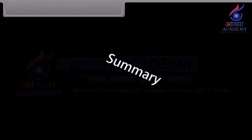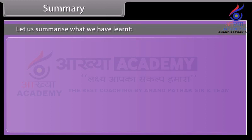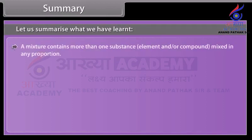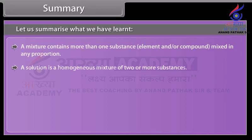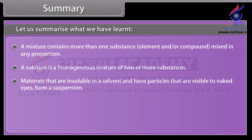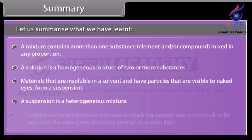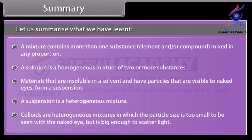Summary. A mixture contains more than one substance, element, or compound mixed in any proportion. A solution is a homogeneous mixture of two or more substances. Materials that are insoluble in a solvent and have particles visible to the naked eye form a suspension — a heterogeneous mixture. Colloids are heterogeneous mixtures in which the particle size is too small to be seen with the naked eye but is big enough to scatter light.